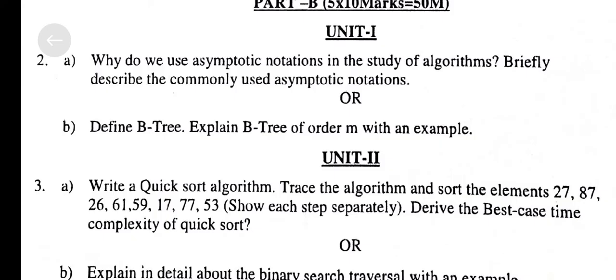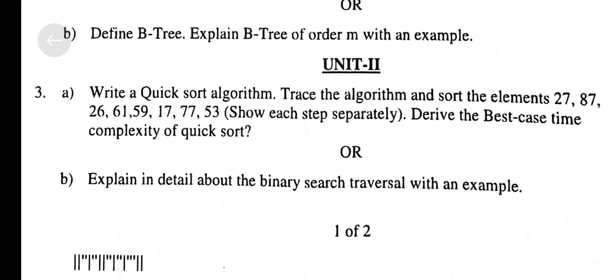B. Define and Explain B-Tree of Order M with an Example. Unit 2: Write a Quick Sort Algorithm. Trace the algorithm and sort the elements 27, 87, 26, 61, 59, 17, 77, 53. Show each step separately. Derive the Best Case Time Complexity of Quick Sort.